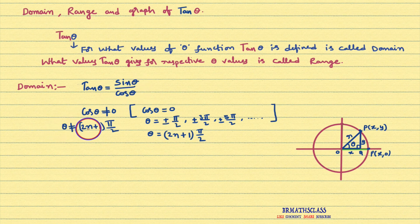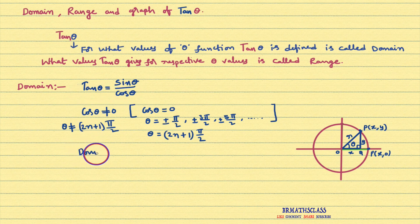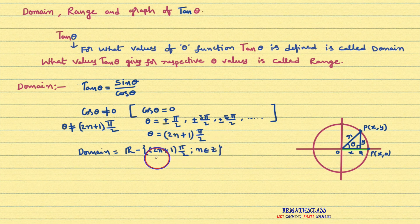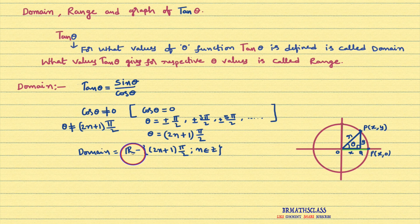So theta cannot be equal to odd multiple of pi by 2. If theta equals odd multiple of pi by 2, cos theta value will become 0, and cos theta becoming 0 means tan theta is not defined. So what is the domain of this function? Tan function is defined for all real numbers except the numbers which are odd multiple of pi by 2, that is (2n+1) times pi by 2, where n is an integer.